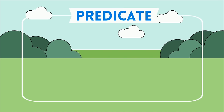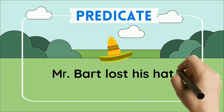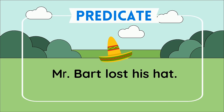Let's take a look at this sentence: Mr. Bart lost his hat. Which part shows what Mr. Bart did? What did he do? He lost his hat. Lost his hat is the predicate of this sentence.